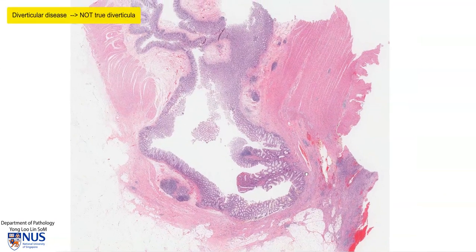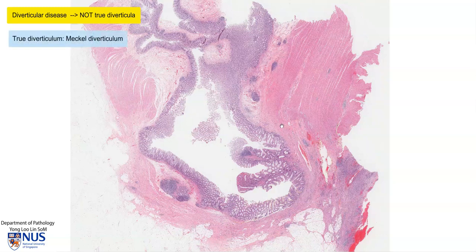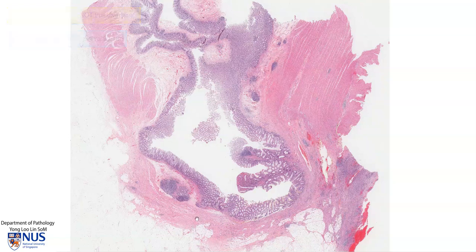So, in summary, this is an example of a colonic diverticulum. This is not a true diverticulum — for example, a Meckel diverticulum or a congenital diverticulum where you see the full layers of the bowel wall surrounding the diverticulum. But instead, this penetrates through the wall of the bowel and only takes along with it a little bit of the muscularis mucosae. Thank you.